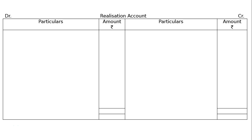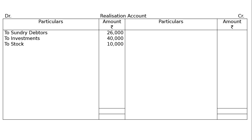B's capital will be on the debit side of the partner's capital account, and A's loan will be shown in the bank account. We have to start with the asset side, that is the debit side: sundry debtors full value 26,000, investments 40,000, stock 10,000, furniture 10,000, and building 60,000.